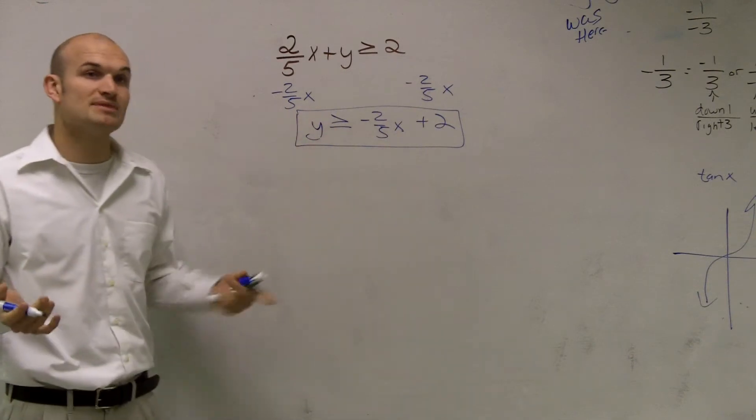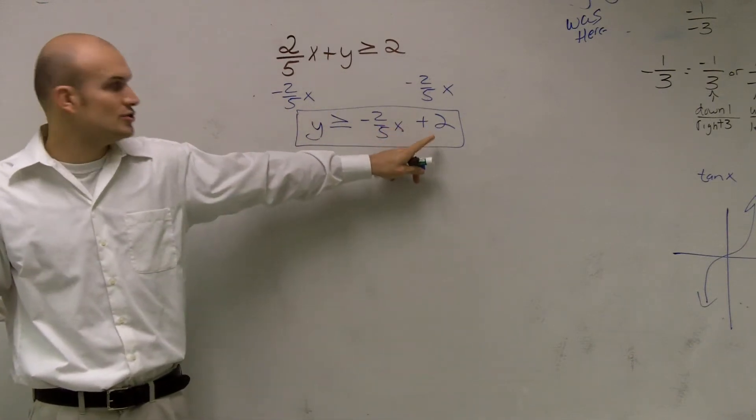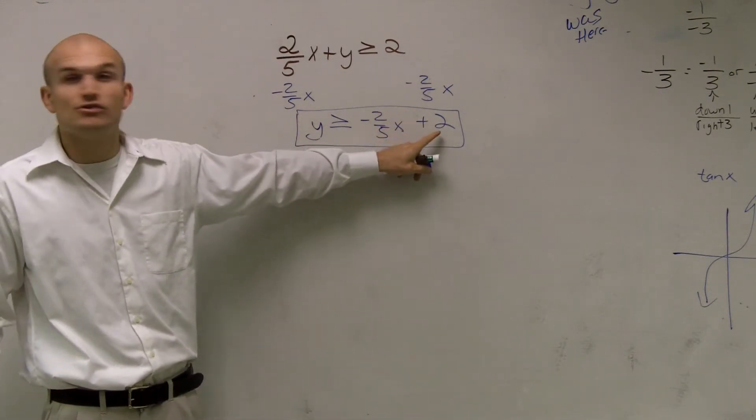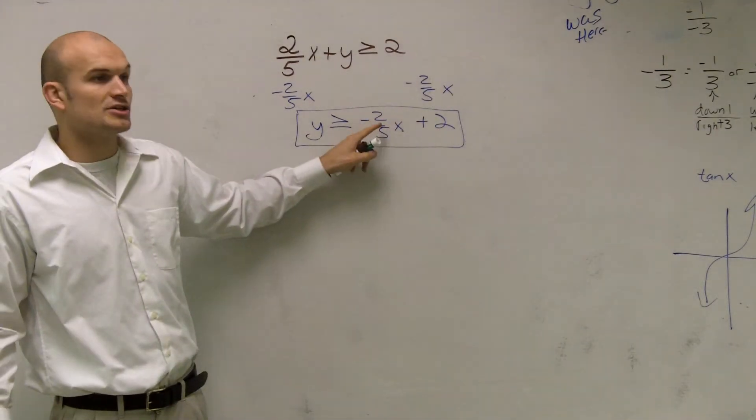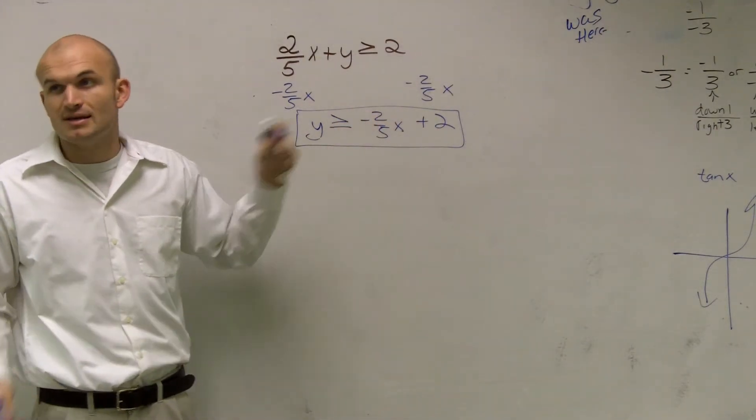So therefore, you guys can write your equation like this. And then, like the previous problem that I've showed you, you can use this to graph your problem, where 2 would be your y-intercept, right? And your slope would be negative 2 fifths.